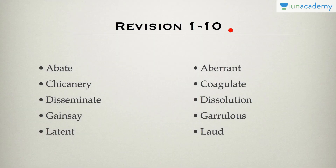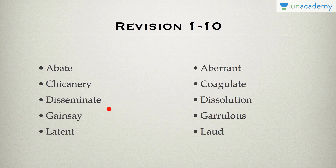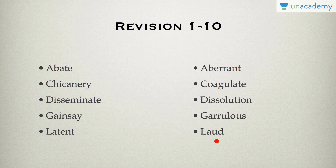Let's quickly revise these 10 words. Abate means to lessen or decrease the intensity of something. Chicanery is to deceive someone or the act of deceiving someone. Dissemination means spreading information. Gainsay is to oppose or contradict. Latent is something idle or present but undeveloped. Aberrant means anything deviating from the normal course. Coagulate means when something groups together. Dissolution is dissolving or ending something like an organization. Garrulous describes someone who talks a lot and rambles to the extent of being annoying. And laud means praising or applauding someone.